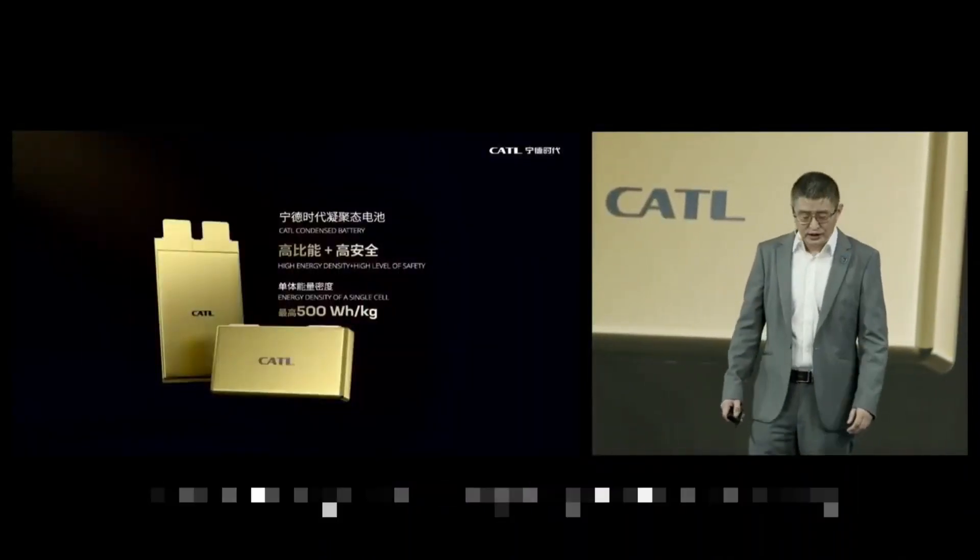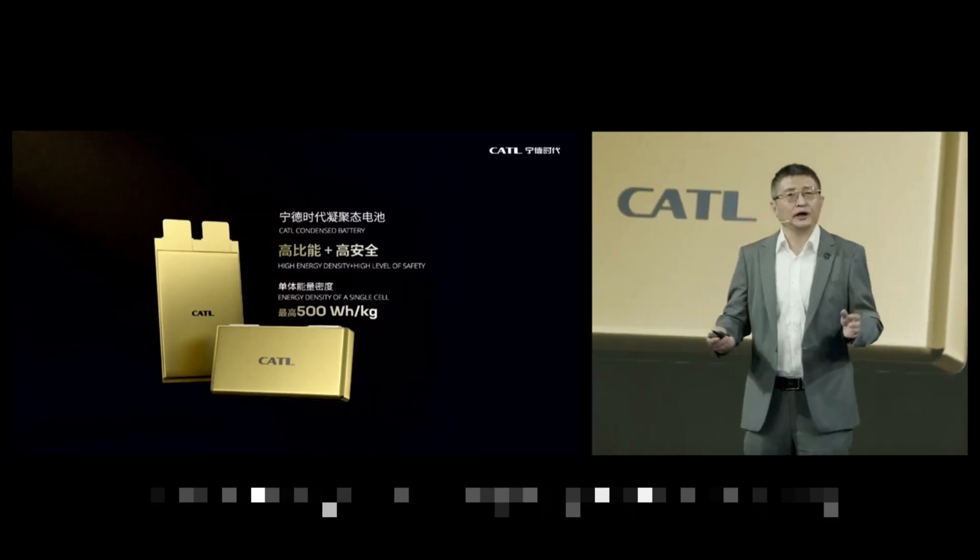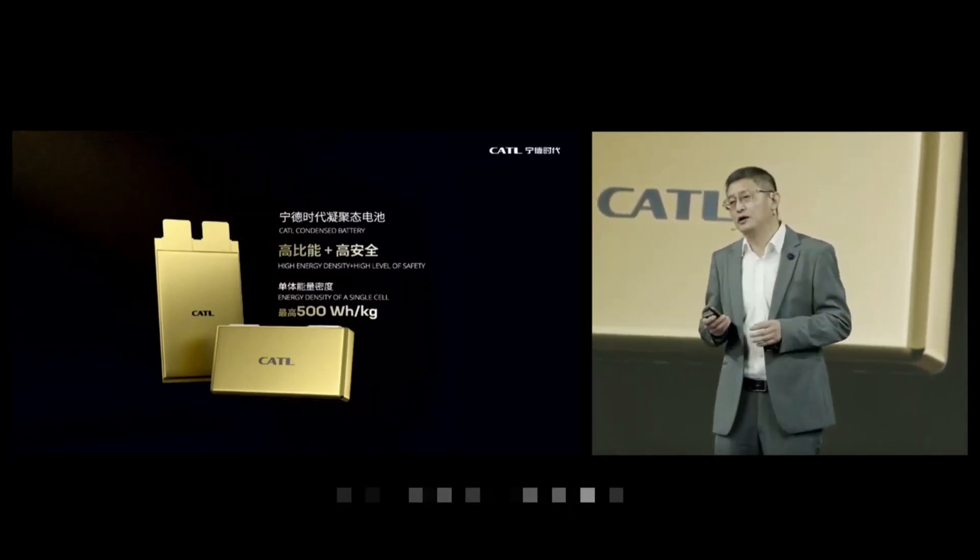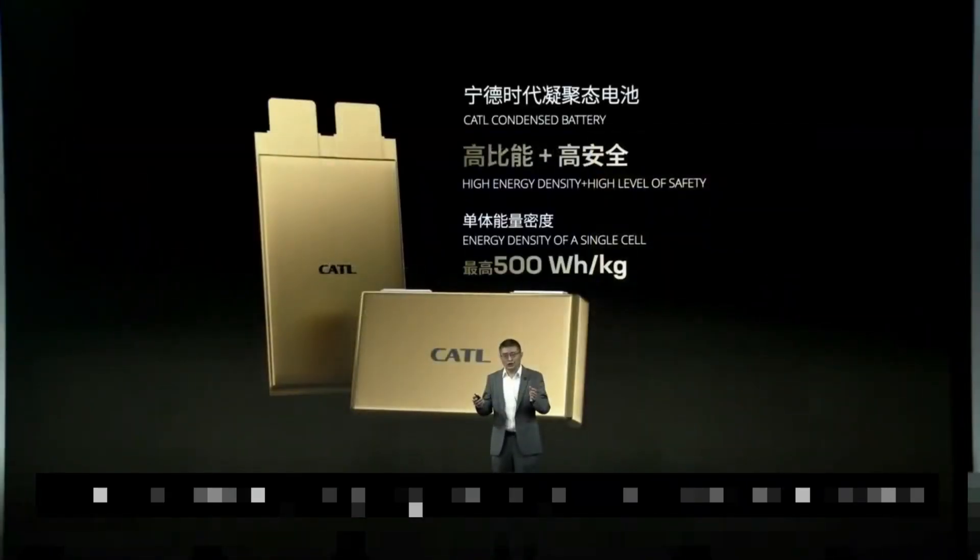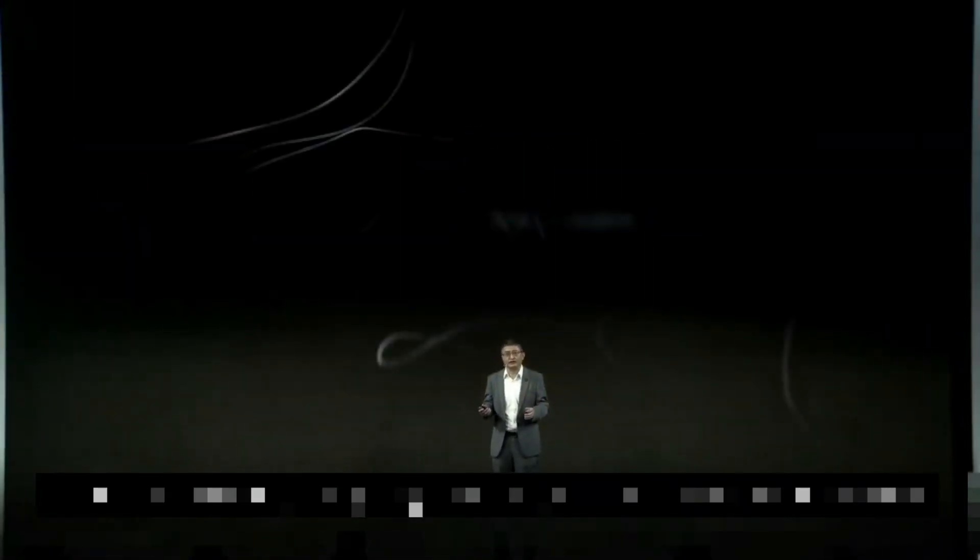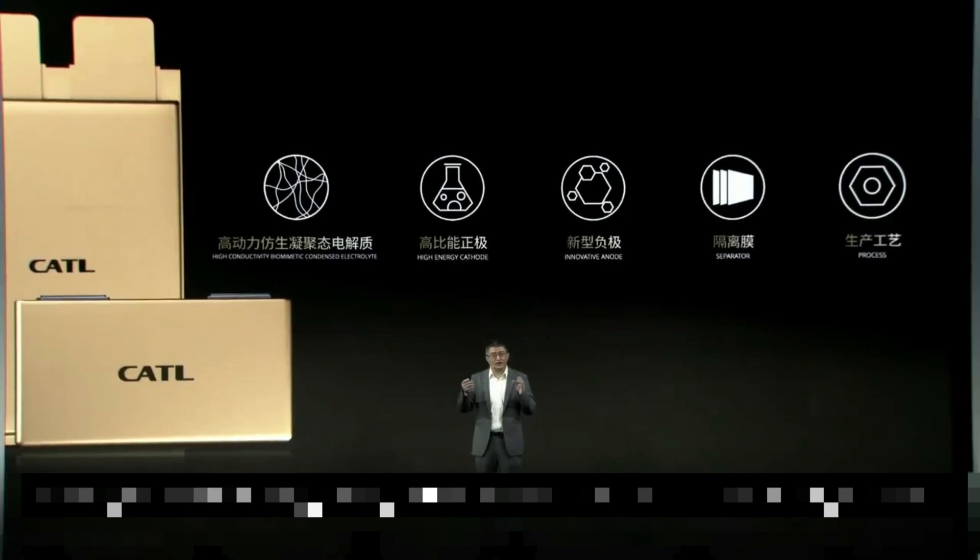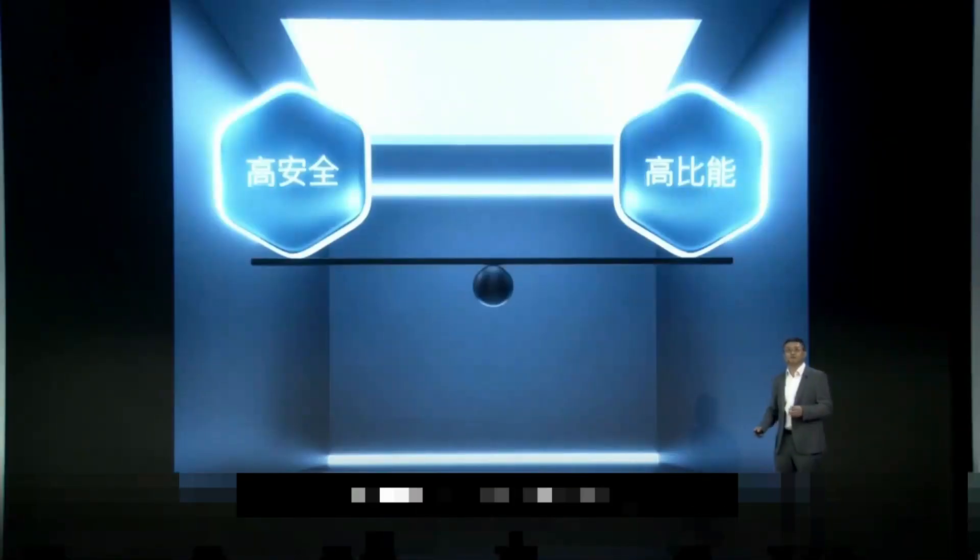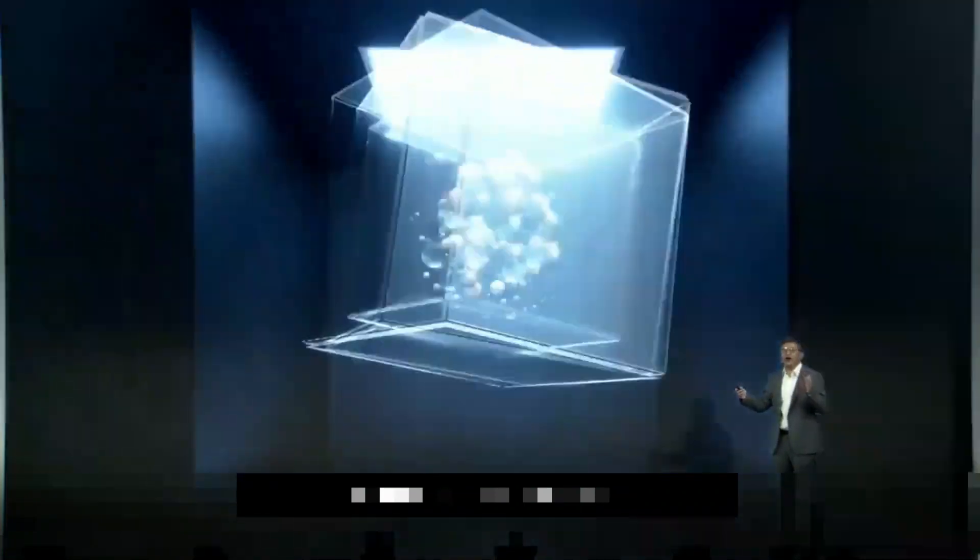CATL claims that it is using an ultra-high-density cathode material, new anode materials and separators, and a new production technique that could allow serial manufacture to begin later this year while not providing much specifics. The price of the new high-energy-density battery was not disclosed at the product launch in Shanghai. A pouch and a prismatic cell structure were on exhibit during the presentation.